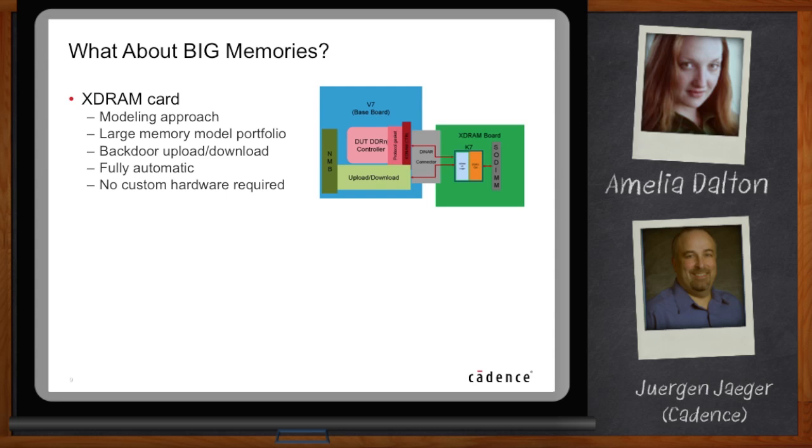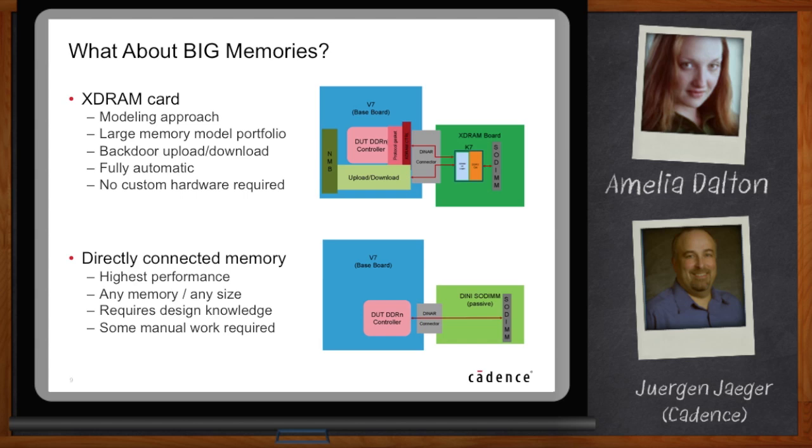For large off-FPGA memories, the Protium Flow offers now two options. First, a modeling approach, which maps virtually any memory into an 8-gigabyte external memory, the XDRAM card, as we call it. Secondly, directly connecting the design's memory controller to the corresponding memory on the daughter card. Both approaches have their pros and cons, of course. The modeling approach makes it very easy for the user. The Protium software does all the work. It allows implementing virtually any type of memory, and it also offers memory upload download capabilities. The directly connected approach offers, on the other hand, the highest possible performance, but requires some user interaction and, of course, the availability of the right memory daughter card. Both options can be mixed in a Protium system, and which one to use depends on user preferences and design requirements.